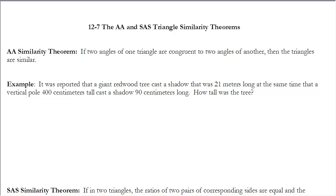We're going to look at two more today. The first is the Angle-Angle Similarity Theorem, which says that if two angles of one triangle are congruent to two angles of another, then the triangles are similar. In similar triangles, the angles are congruent. We only need two angles because if we know two angles in a triangle, we automatically know the third — we subtract the other two from 180.